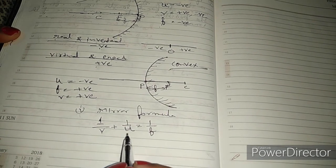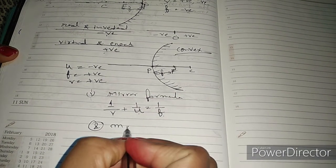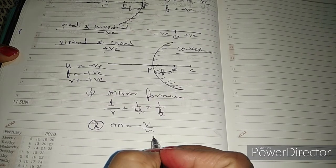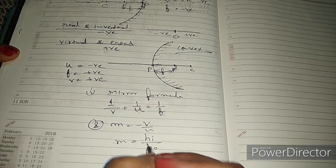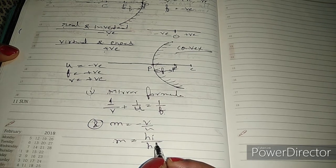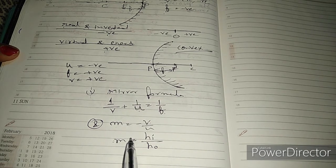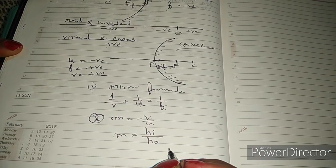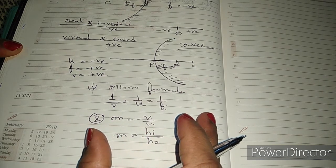Second formula is magnification. M is equal to minus V by U, image distance by object distance. And magnification formula: height of image by height of object. This we will use for size. M is equal to h i by h o. Next class I will tell you how to solve numerical. Thank you for watching.